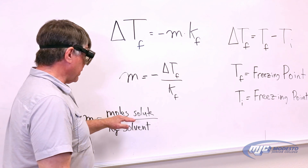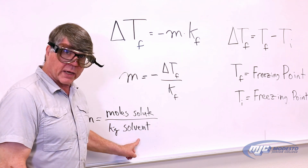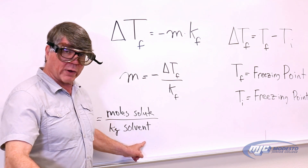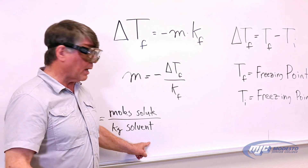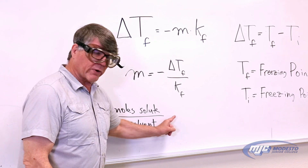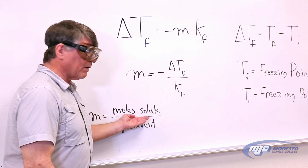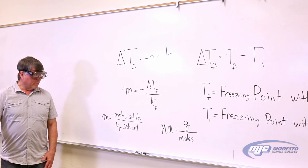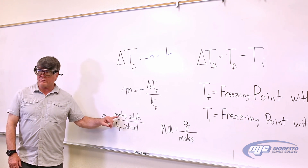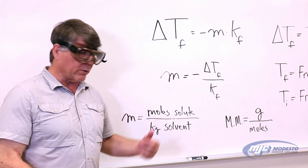Once we know the molality, it's real easy to find the moles of the solute — moles of your unknown — because the solvent, the lauric acid, we're going to weigh that. So we'll know how many grams, and that means how many kilograms of our solvent we have. If we just take this number, multiply it by the kilograms of lauric acid that we weigh out, this cancels, and what we have left is the moles of solute. Our goal in this whole experiment is to find the molar mass of our unknown, our solute.